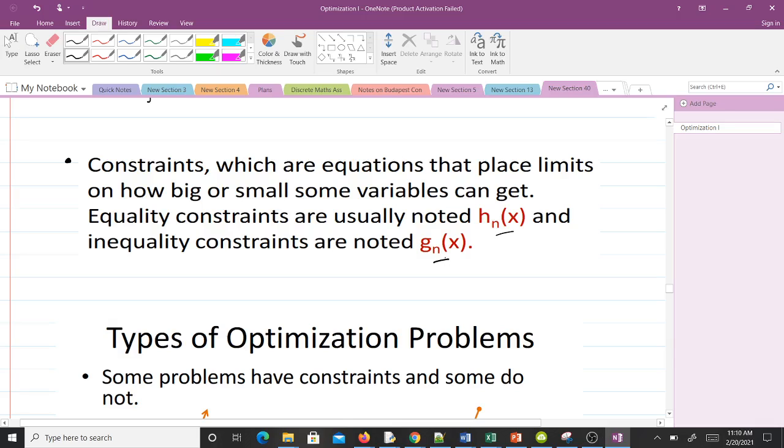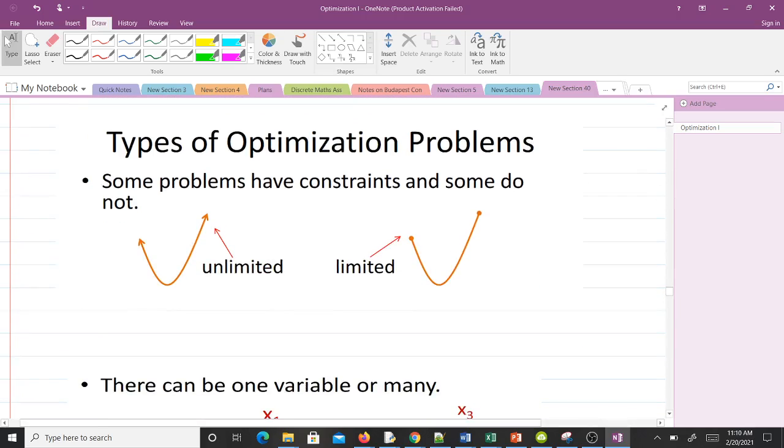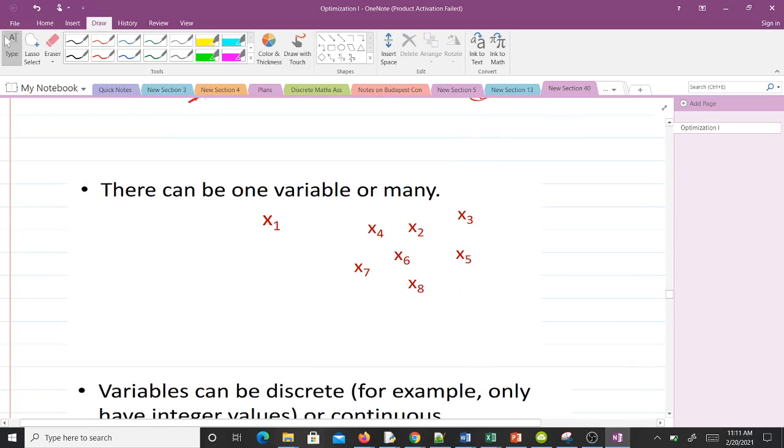Now let's talk about types of optimization problems. Some problems may have constraints and some do not. For instance, here we are unlimited—that means we don't have any constraints. But here we have to end here, so we are limited and we have constraints. There can be one variable or many of them—single variable or multiple variables.